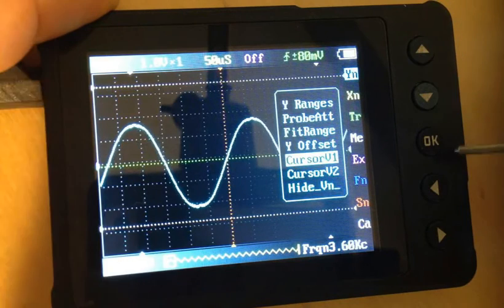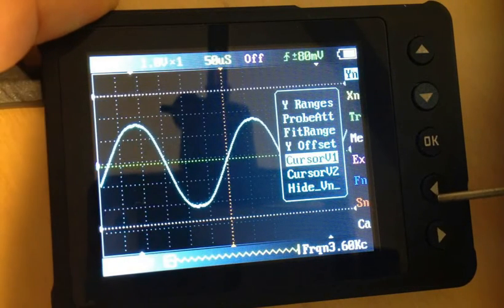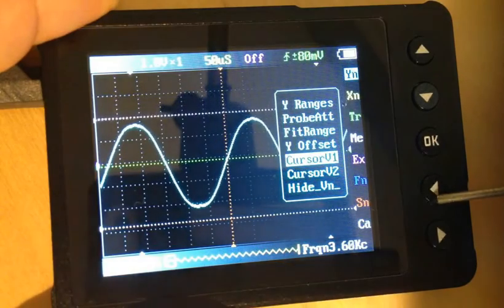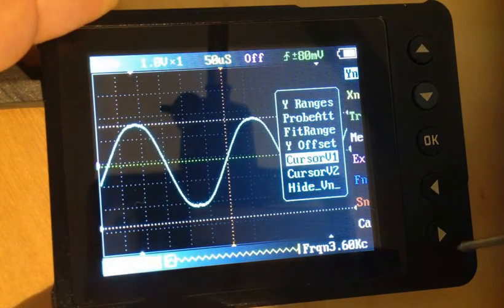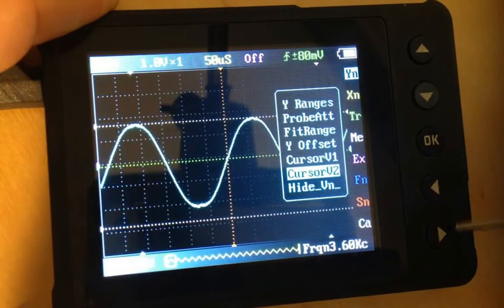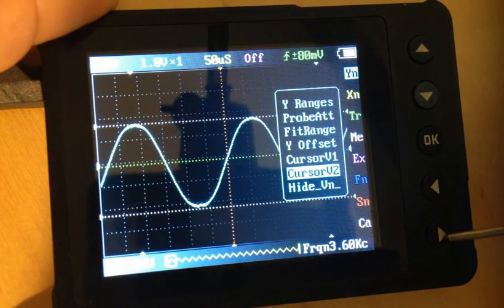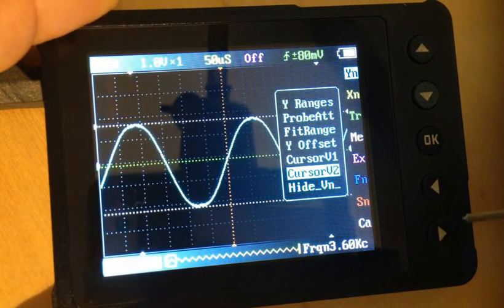Now we'll go up to cursor V1, and we will move it down until it hits the top of the waveform. That looks pretty good. And then we'll move to cursor V2, and we'll move it until we get to the bottom of the waveform. That looks pretty good.